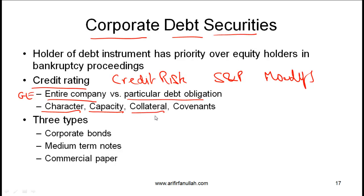Collateral deals with what sort of collateral we have against the bond — if the quality of collateral is good, that helps improve the rating. Covenants refers to the affirmative and negative covenants we've spoken about earlier; if the covenants are strong and investor-friendly, that helps the rating. As long as you understand one or two lines on each item, that is good enough for now.